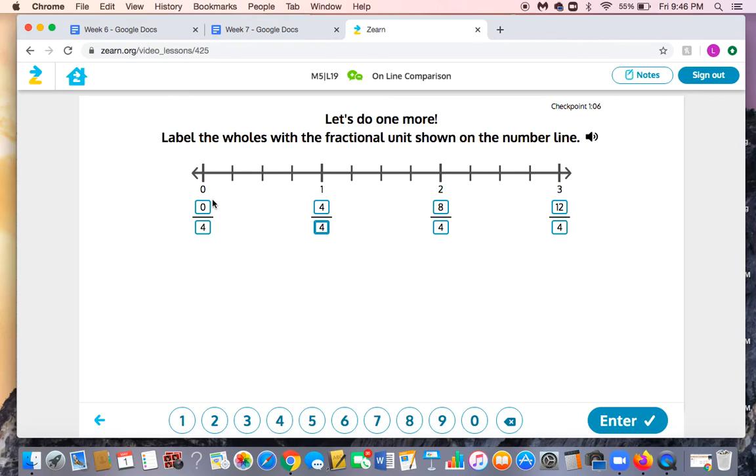So in this case, we're talking about fourths because there were 4 spaces or 4 parts between 0 and 1 whole. Another activity that they may have you do is to place numbers or fractions on a number line. So if I asked you to figure out where 6 fourths would be, I don't see that number here. I have to figure that out. Well, 6 is bigger than 4 and less than 8.